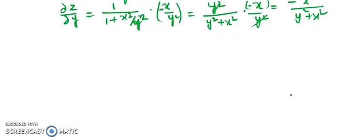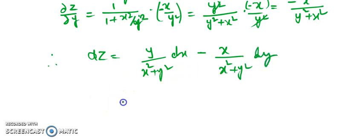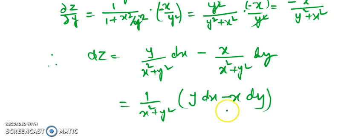Putting it all together, dz equals y over (x² + y²) times dx, plus minus x over (x² + y²) times dy. Taking 1 over (x² + y²) as common, we get dz equals y·dx minus x·dy all over (x² + y²). That gives us the total differential for this function.